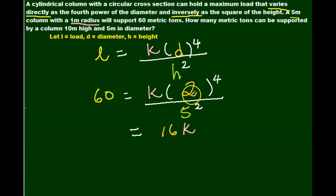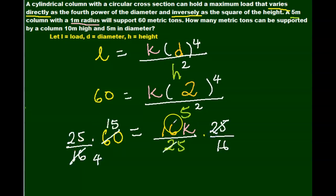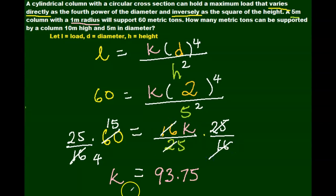So we simplify that. 2 to the power of 4 is 16, and 5 squared is 25. And to get rid of my 16 over 25, we're going to multiply both sides by the reciprocal of 16 over 25, which is 25 over 16 on both sides of our equation. 60 and 16 are divisible by 4. These cancel out on the right hand side, and that simplifies to k equals 93.75.